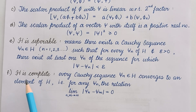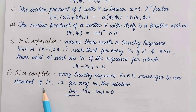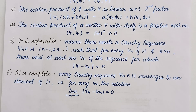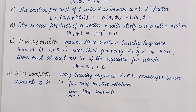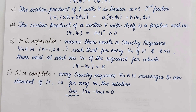The sixth property: H is complete. Every Cauchy sequence psi-n belonging to H converges to an element of H. That is, for any psi-n, the limit as n and m tend to infinity of the norm of psi-n minus psi-m equals zero. For example, taking the real number line with rational numbers, there is no gap between them, making it complete. But if we include irrational numbers, we can see gaps between rational numbers, making it incomplete. Similarly, H being complete means it has no gap in between.